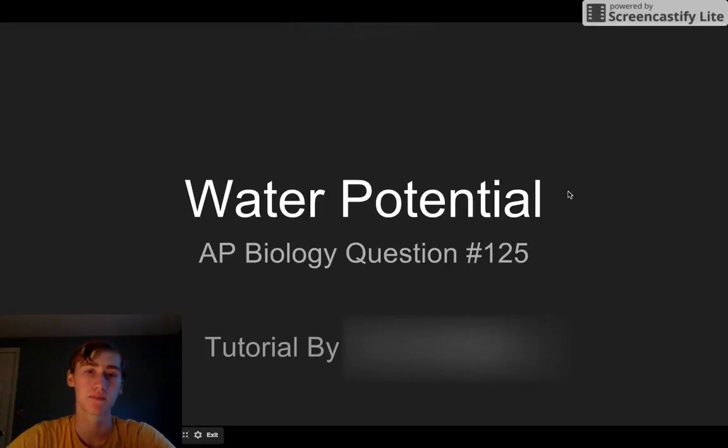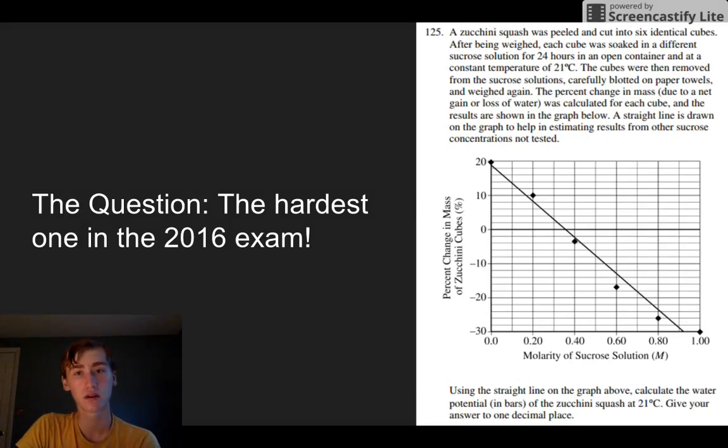Hi guys, this is Julian. I'm going to talk to you about AP Biology question 125. To solve this question you have to know about water potential, so I'm going to explain a little bit of that as well. This question had the lowest percentage on the 2016 AP exam - around 16% of people got it right.